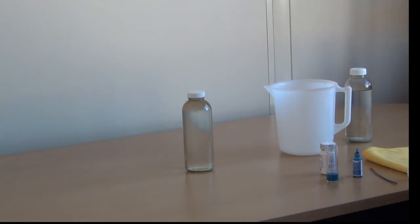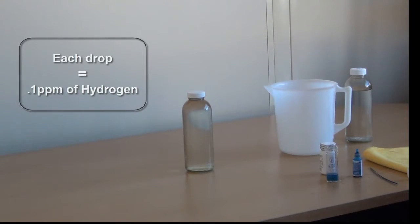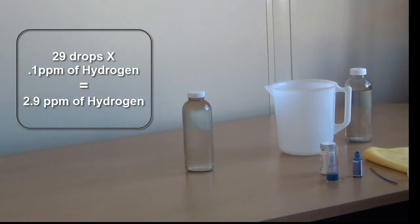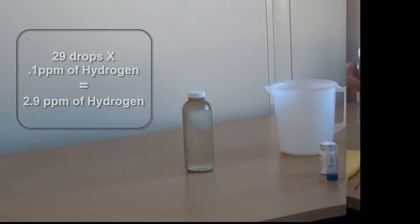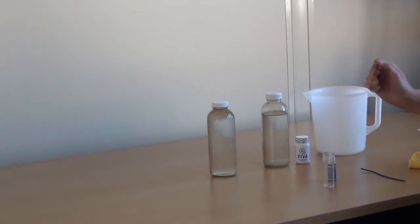So we had twenty-nine drops. Each drop represents point one part per million of hydrogen. Twenty-nine times point one equals two point nine parts per million of hydrogen in the water we tested.